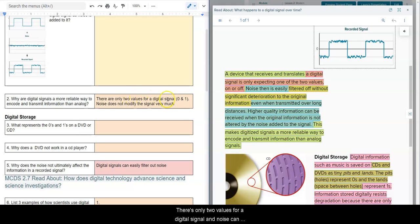So there's only two values for a digital signal, and noise can be filtered out.